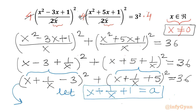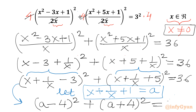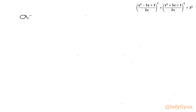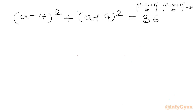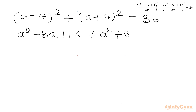So I can write our equation as (a - 4)² + (a + 4)² = 36. Now I will use two algebraic identities — the (a + b)² and (a - b)² formulas. Expanding: (a² - 8a + 16) + (a² + 8a + 16) = 36.